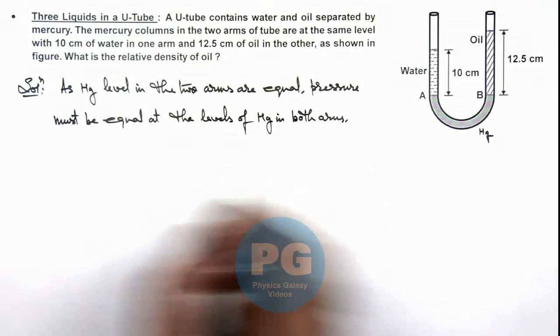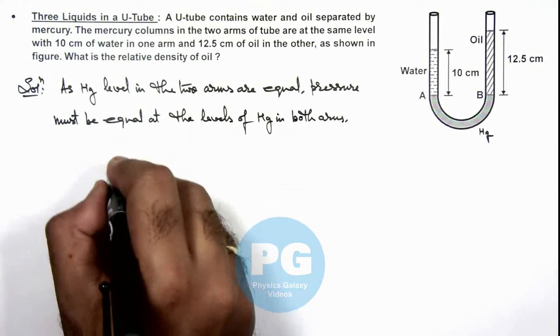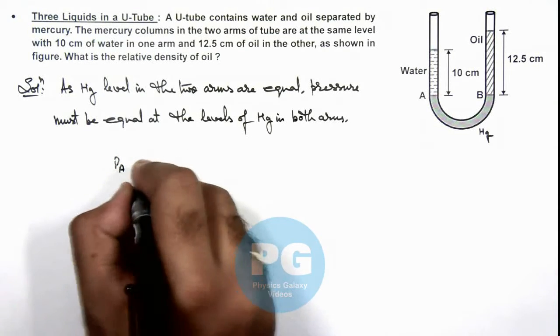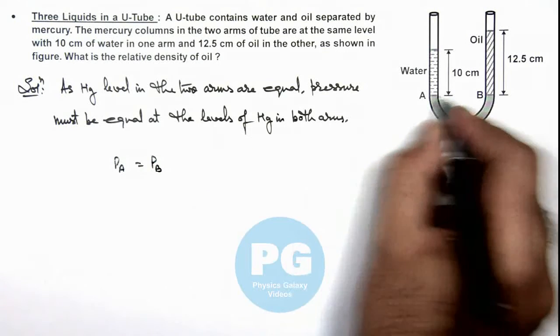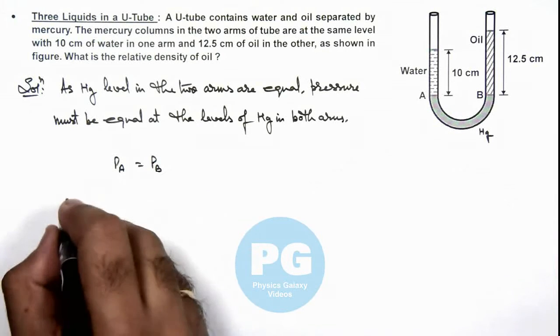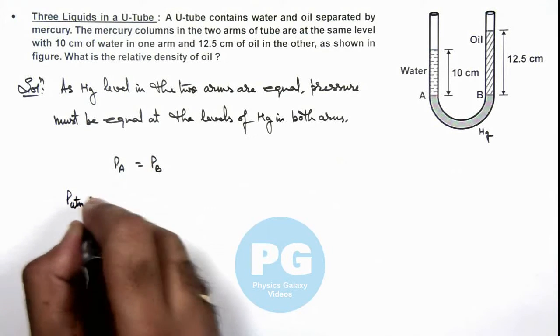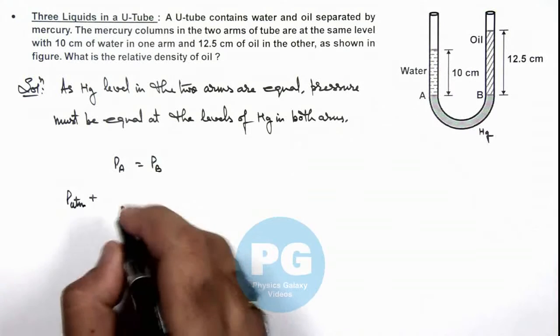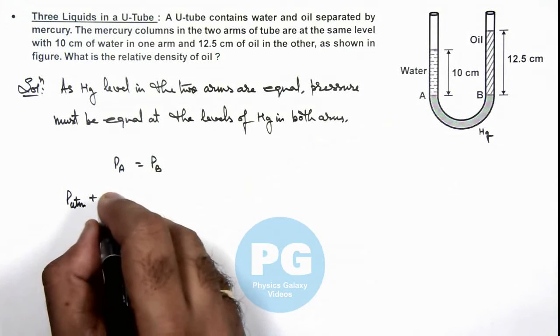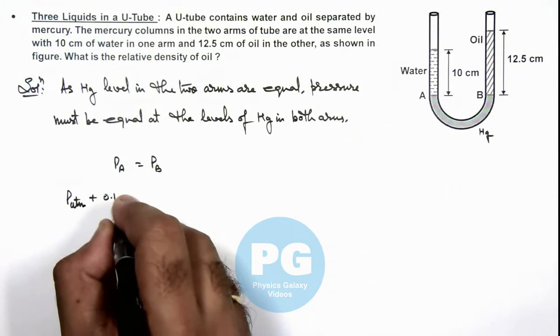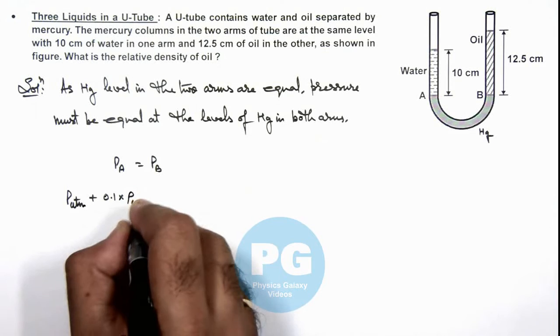So, in this situation here we can directly write pressure at point A must be equal to pressure at point B. So pressure at point A is P_atmospheric plus, water length is 10 centimeter so we can write it as 0.1 multiplied by ρ_water multiplied by g.